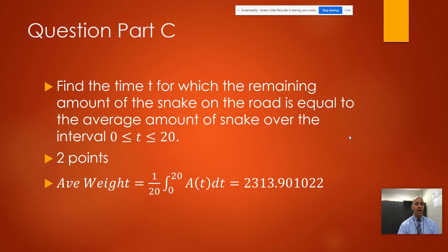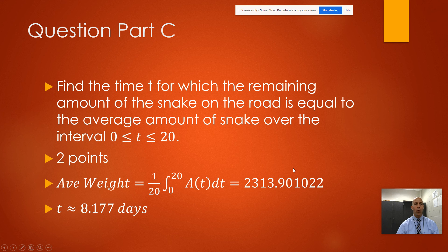It's going to be 1 over 20 minus 0, integral from 0 to 20 of A(t). I would just use my calculator to do that. That gives us 2313.901 grams - that is the average weight.